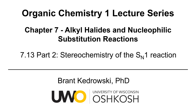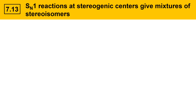Hello, everyone. My name is Brant Kudrowski, and this organic chemistry video will cover the stereochemistry of the SN1 mechanism. SN1 reactions of stereogenic centers give mixtures of stereoisomers. To illustrate this, we're going to use this tertiary alkyl bromide shown here.